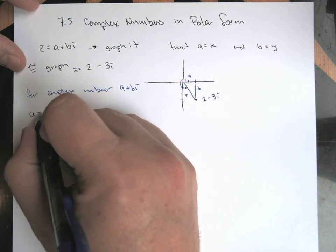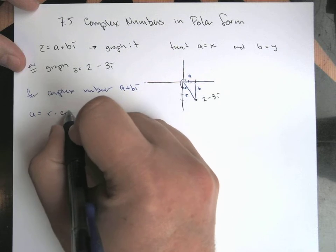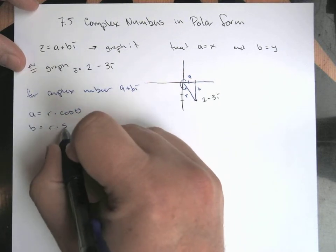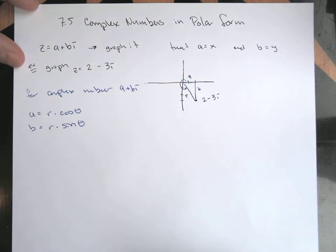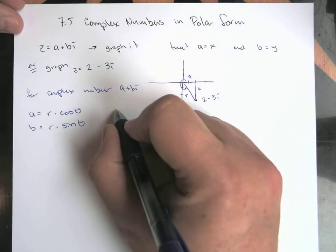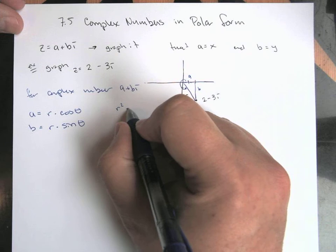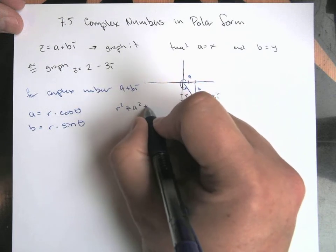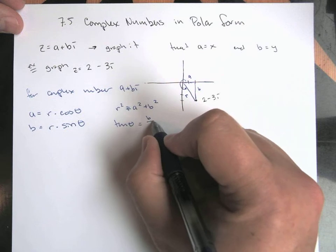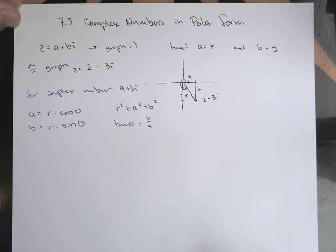And then kind of the vice versa relationships going the other way, right, our sort of radius squared would equal a squared plus b squared, and our sort of tangent of the angle would be equal to the b value divided by the a.